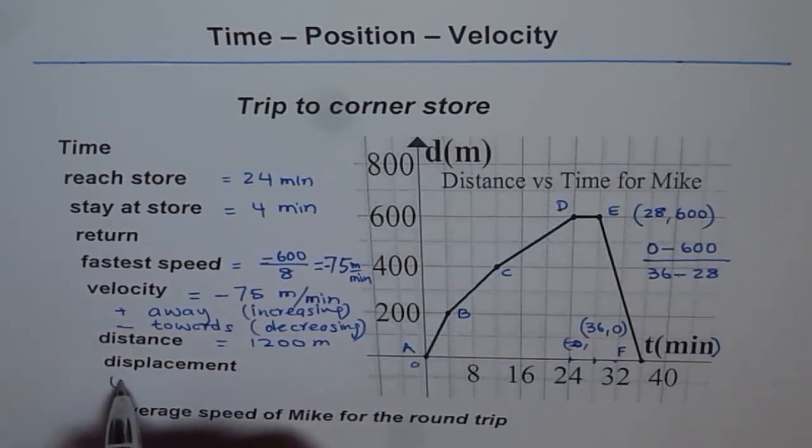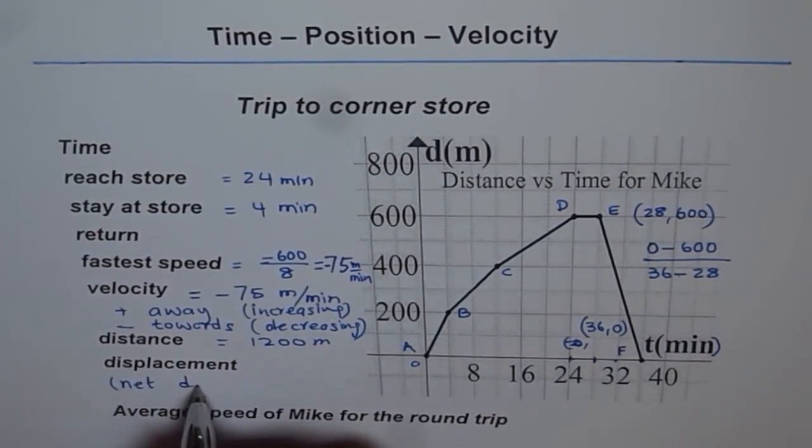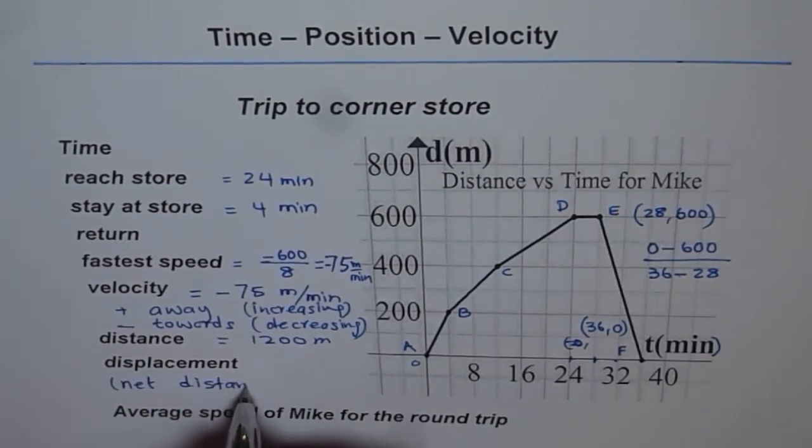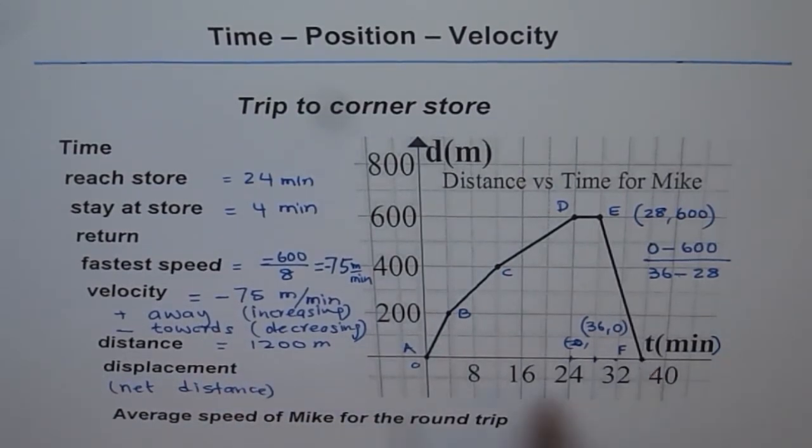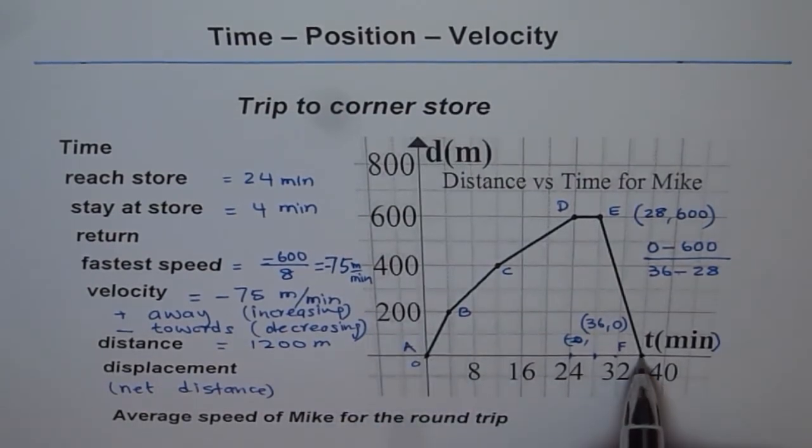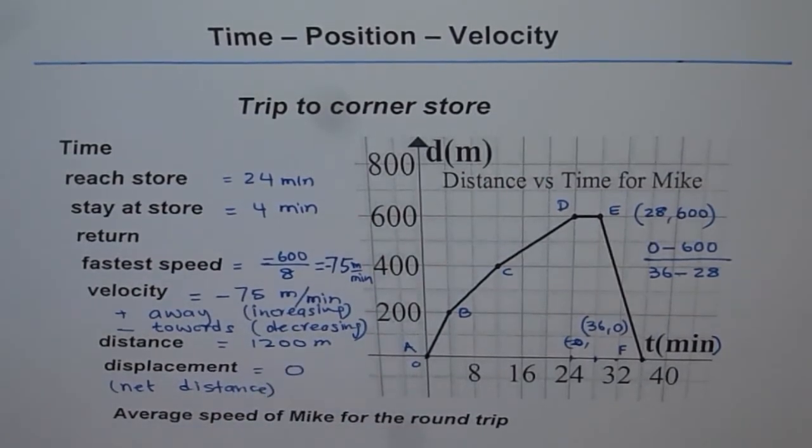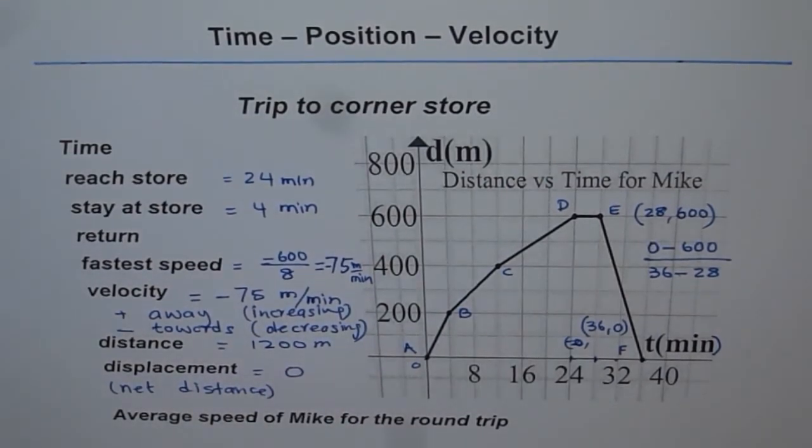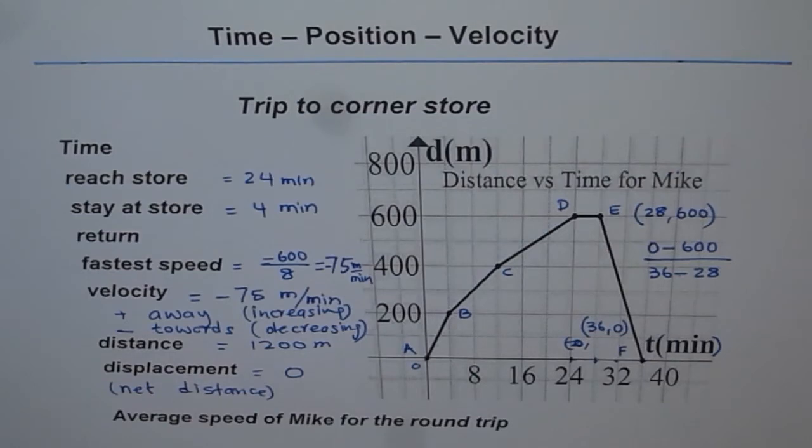Displacement is actually net distance. Net distance is final position minus initial. When you started, the distance was zero. When you finished, distance was zero. So here, net displacement is zero. You started from home, reached back home. So how far were you from home? That is the displacement. You were at home. You started from home, reached back at home. So the distance between the two positions is zero. We say displacement.